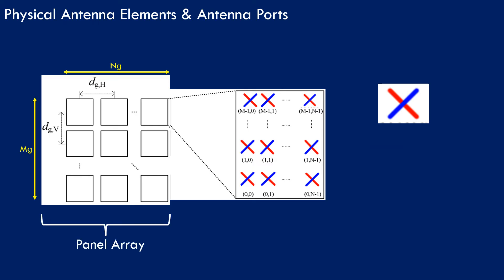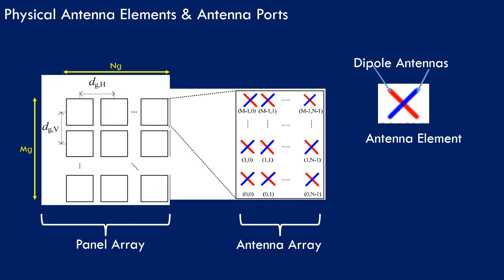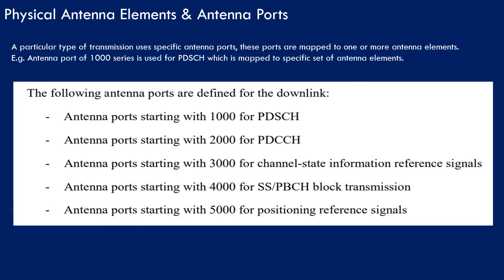Each panel array has multiple antenna arrays, and each antenna array has multiple antenna elements. Each antenna element is made up of two cross-polarized dipole antennas. A particular type of transmission uses specific antenna ports, and these ports are mapped to one or more antenna elements.